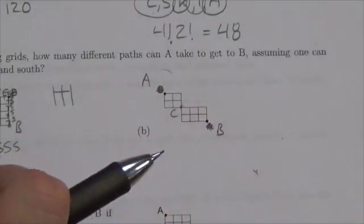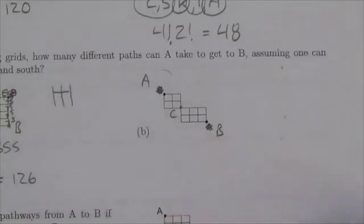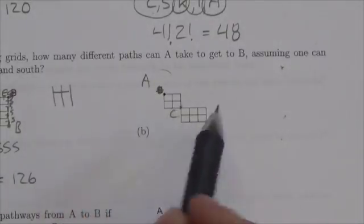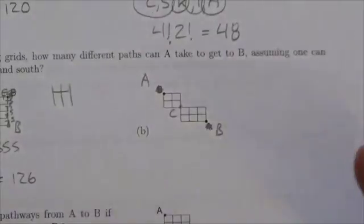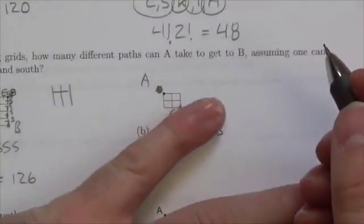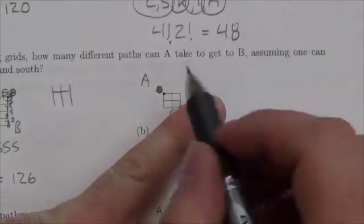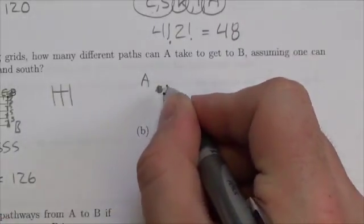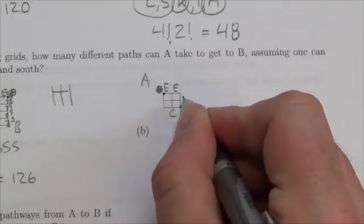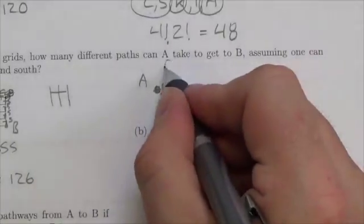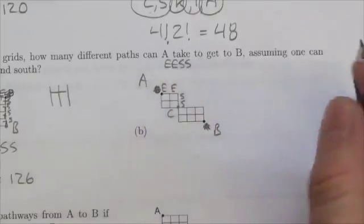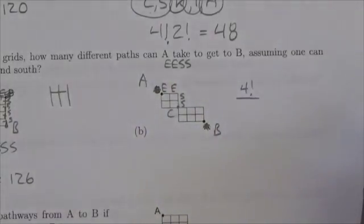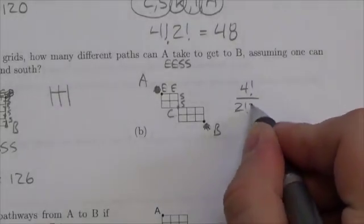So for me to get from A to B, this is what my path has to look like. I have to have a path that goes from A to C and C to B. And remember that the word 'and' implies multiplication. So first of all, I'm going to ignore that second grid there. Any path that goes from A to C is going to go east twice and south twice. So it'll be east, east, south, south. There will be four blocks that I have to cover. So 4!/(2!×2!).